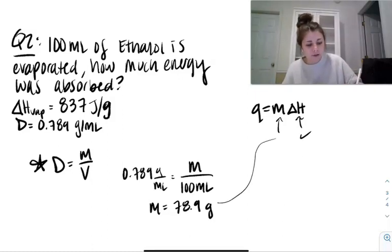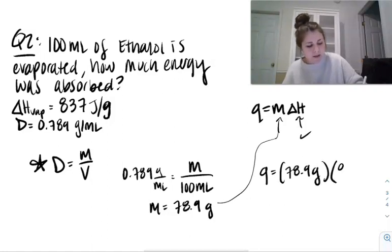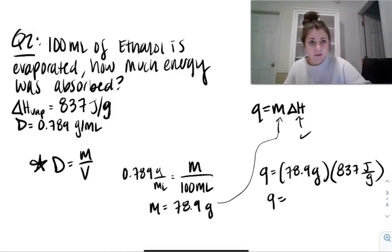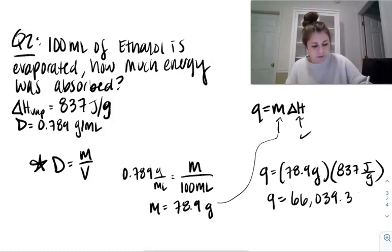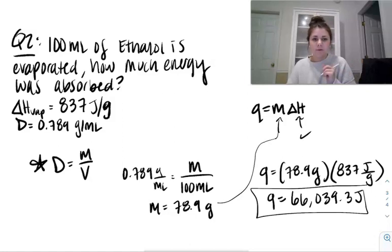So here Q equals 78.9 grams multiplied by 837 joules per gram. We should end up getting our value as 66,039.3 joules. And the next lesson we're going to learn about doing them multiple times in the same question. So here we go.